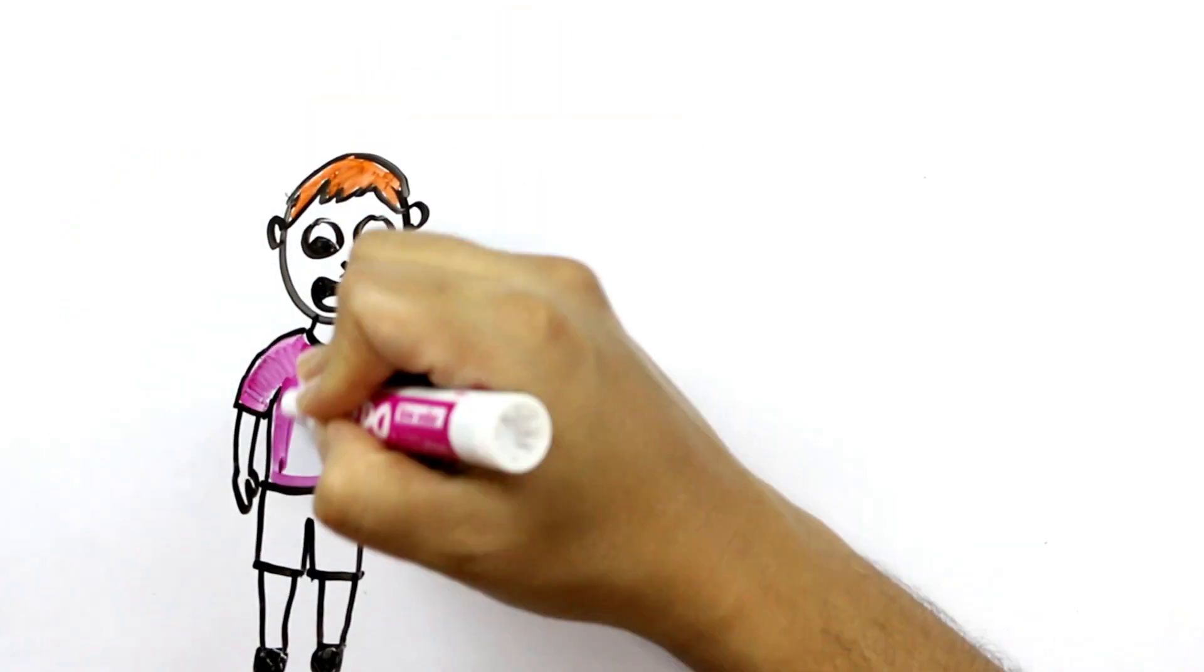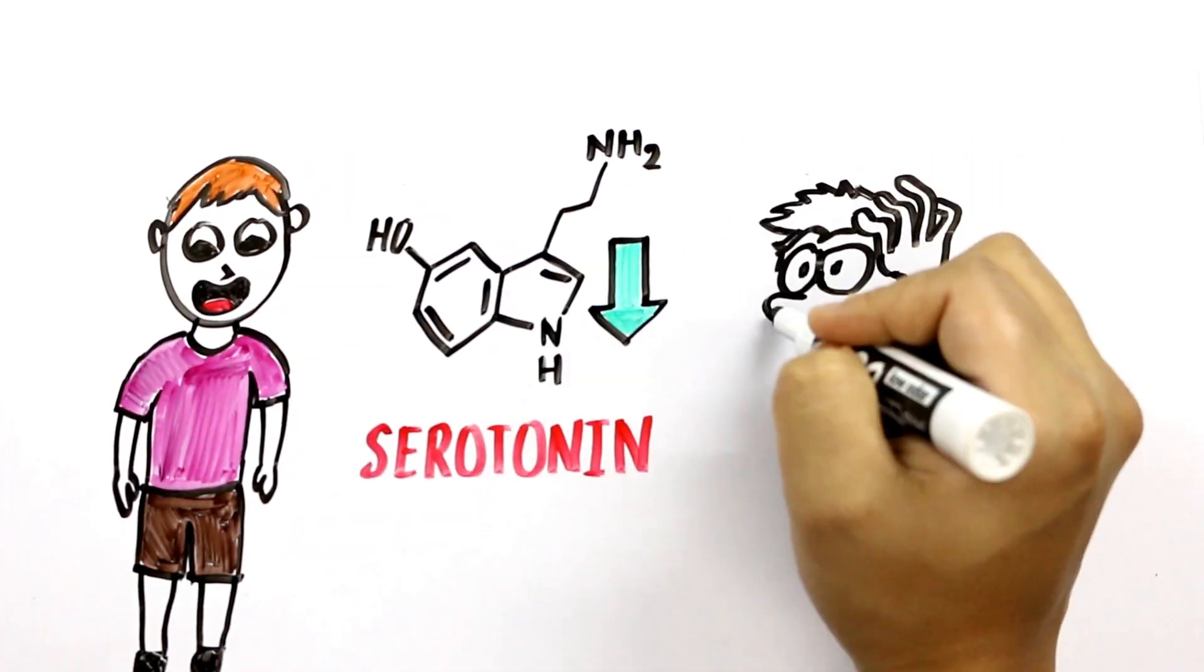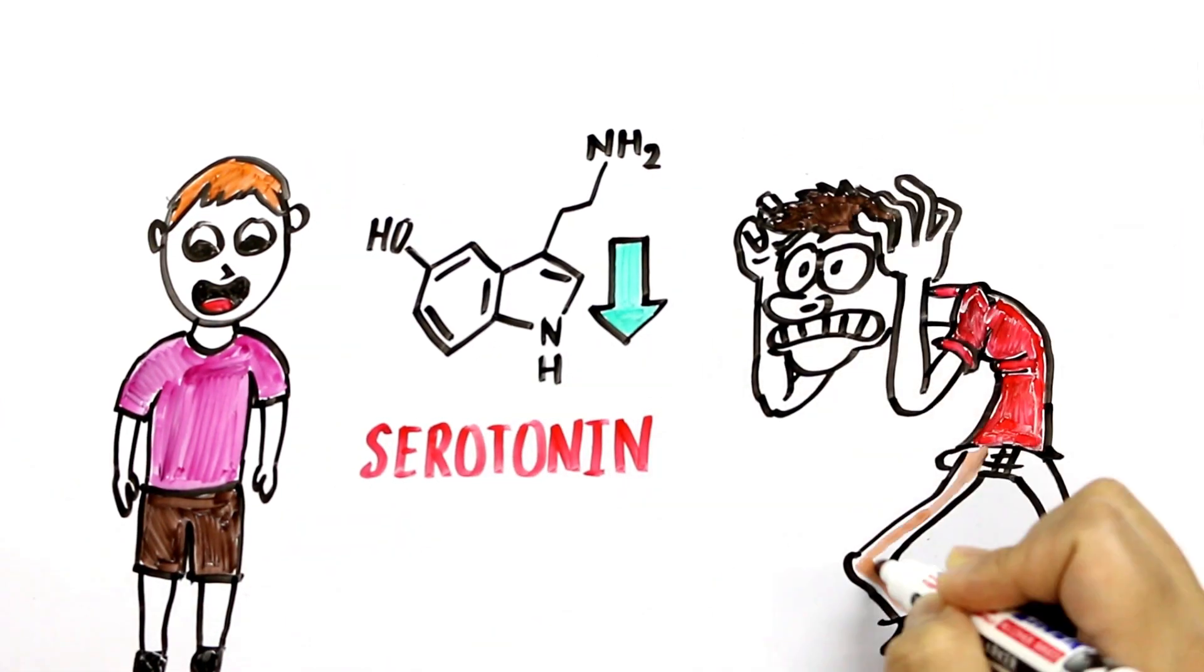One result of rising dopamine levels is the reduction in the hormone serotonin which is important in maintaining mood and appetite. This is why love can make you feel anxious and jittery at times.